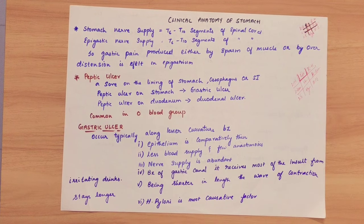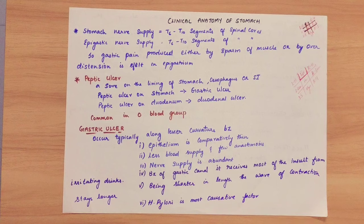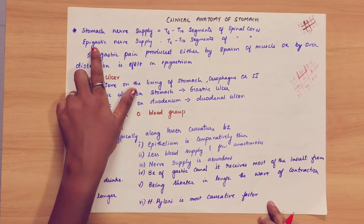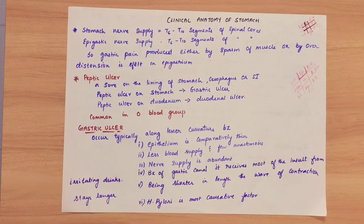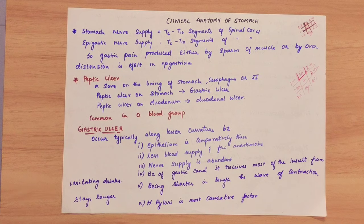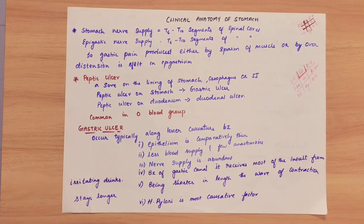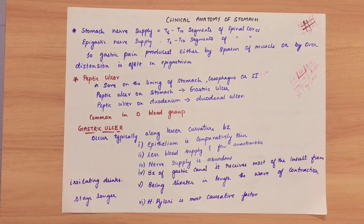The pain is in the epigastric region because the nerve supply of the stomach comes from the T6 to T10 segment of the spinal cord, which is referred to the epigastric region. Stomach acids are secreted, leading to peptic ulcer — a sore on the lining of the stomach, esophagus, or small intestine (duodenum). Peptic ulcer on the stomach is called gastric ulcer; peptic ulcer on the duodenum is called duodenal ulcer.